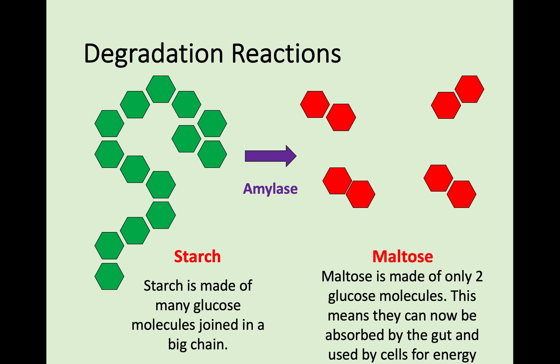This diagram shows more of what the reaction looks like. You can see that starch is a long molecule made of many glucose molecules in a large chain. When amylase, the enzyme, is added to it, a degradation reaction takes place and this breaks down into maltose, which you can see are smaller molecules — only two glucose molecules long. This can now be absorbed by the gut and used by cells for energy when you're actually digesting food.